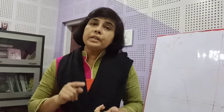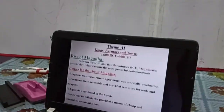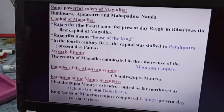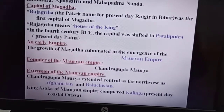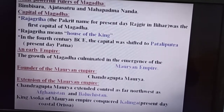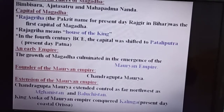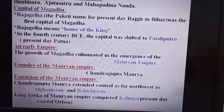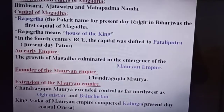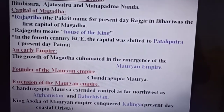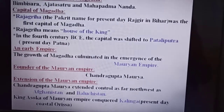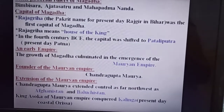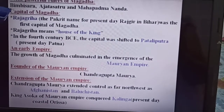The Buddhist and Jain texts give credit to three rulers for the rise of Magadha. One of them was Bimbisara. There were three important rulers of ancient Magadha.